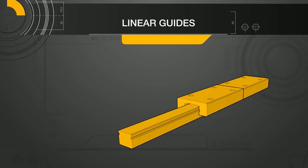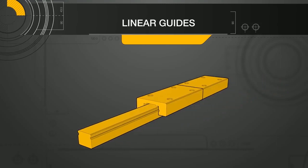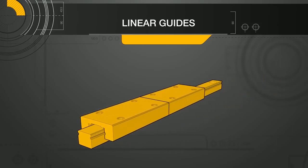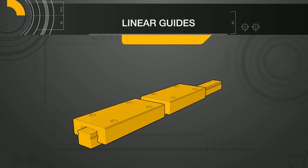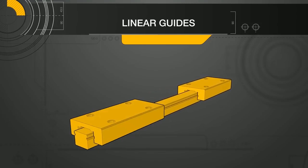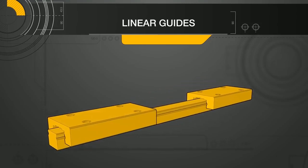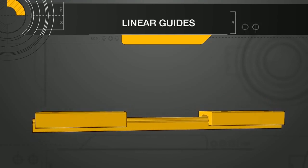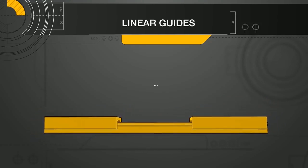Some manufacturers include static moment rating for two blocks. This would only apply when the blocks are end-to-end. As the blocks are spread further apart, the loading within each block evens out, and the standard radial and reverse radial load calculations can be used. The standard rule of thumb for converting moment to equivalent radial and reverse radial loads without correction factors is one full block length between the blocks.